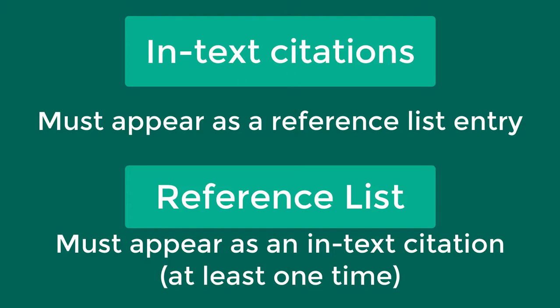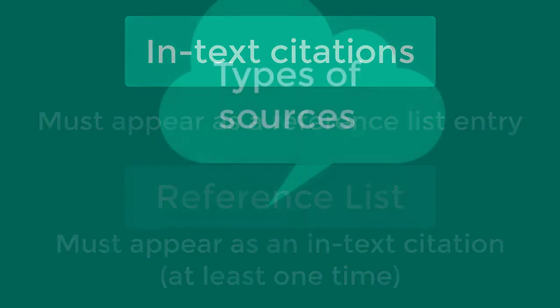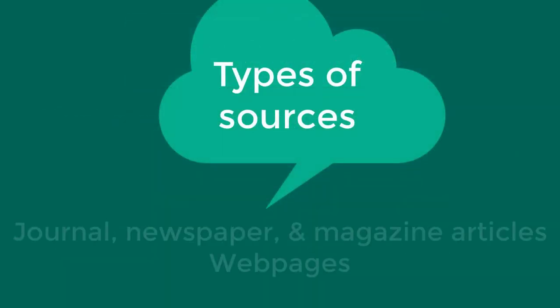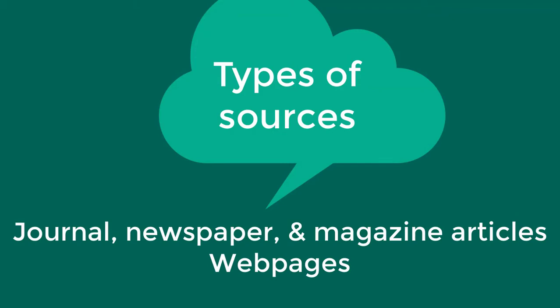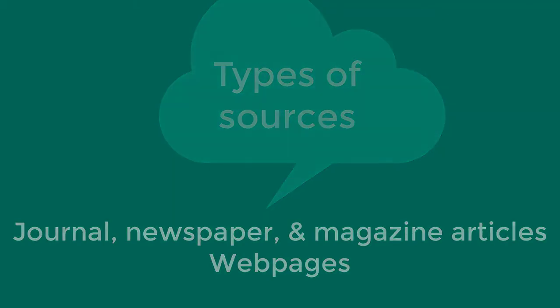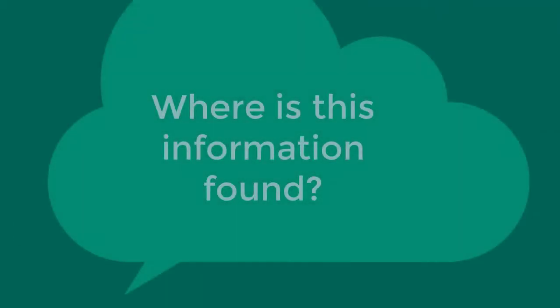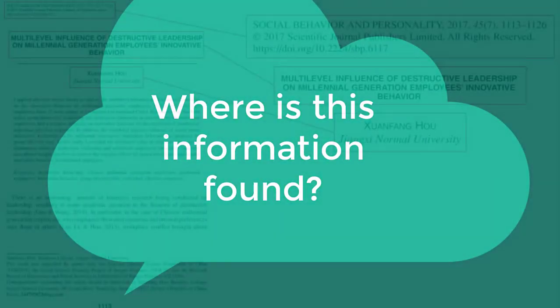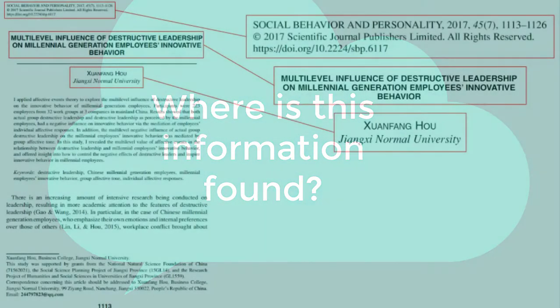We'll cover some common types of sources you may need to cite in your papers, including journal articles, newspaper and magazine articles, and websites. First, let's identify where you will find the information needed for your citations.